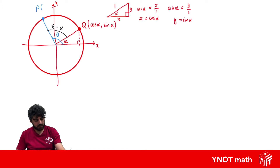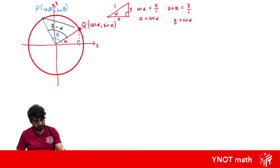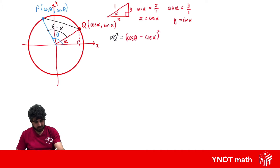We can do the same thing for P, giving the x-coordinate as cos theta and the y-coordinate as sin theta. Now we'll write expressions for the distance PQ. Using the distance formula, PQ squared equals (cos theta minus cos alpha) all squared, plus (sin theta minus sin alpha) all squared.